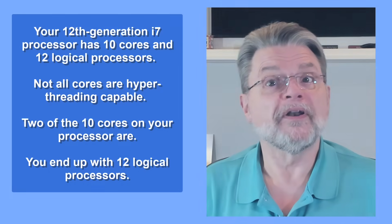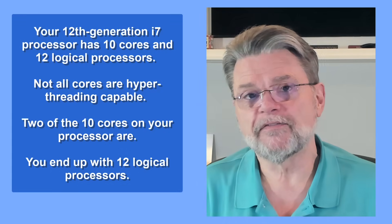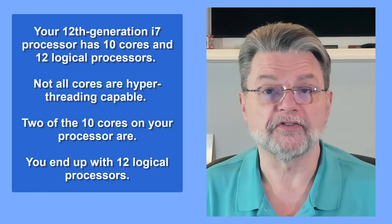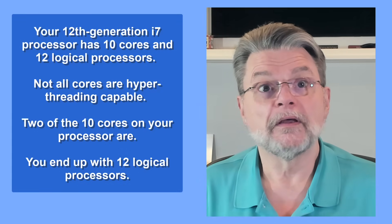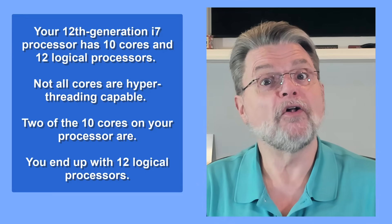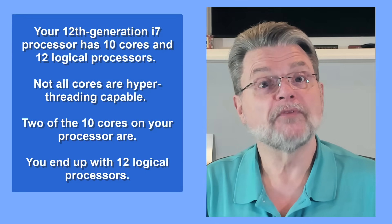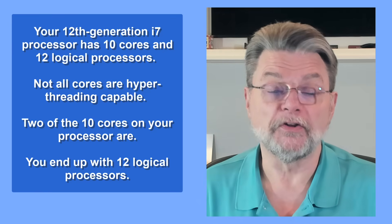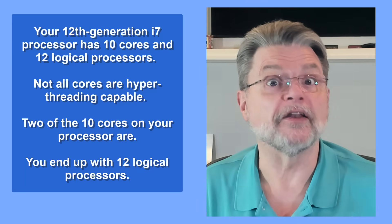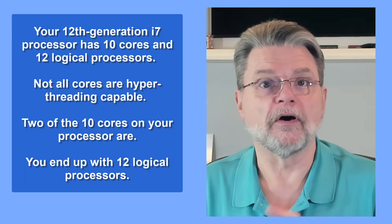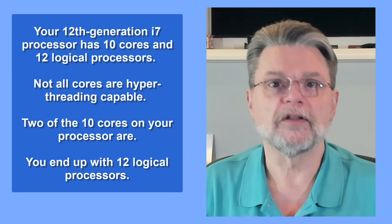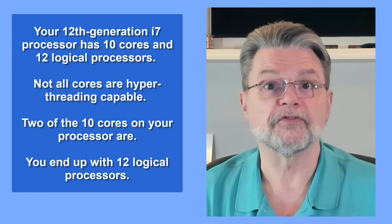Here's an interesting catch: you pointed out that your 12th generation i7 has 10 cores and 12 logical processors. It turns out not all cores are made to be hyper-threading capable. In your case, it looks like only two of the 10 cores on that processor are hyper-threading capable, and that's why you end up with 12 logical processors overall.